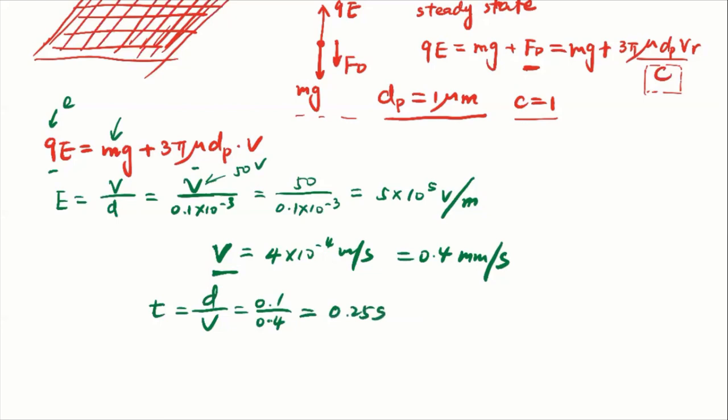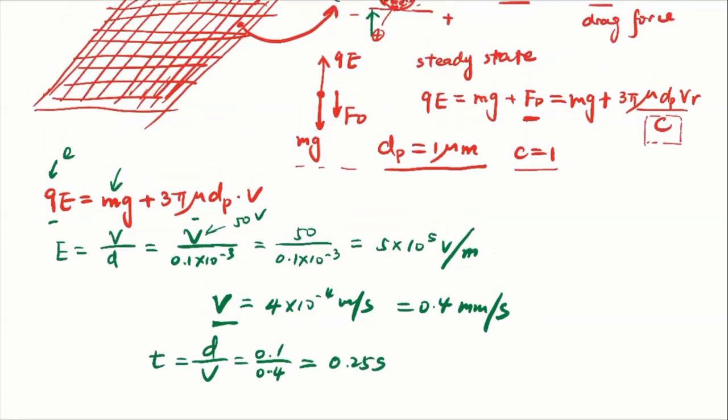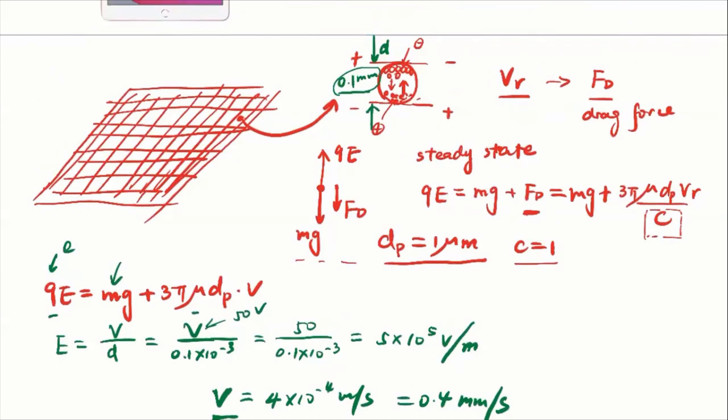In order to let the ink particles move up 0.1 mm, the time is D/V = 0.1 / 0.4 = 0.25 seconds. That's already pretty long — you can feel the delay. That's why the Kindle or the E-ink system has a slower response compared to LED or iPad systems. Next class we're going to talk about the ESP and how to remove particles using electrostatic force.